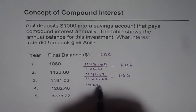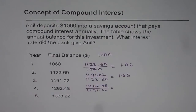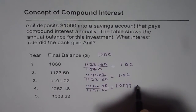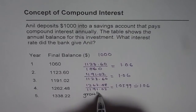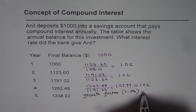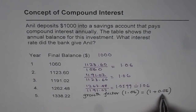That also gives us 1.06. Let's do it once again: 1262.48 divided by 1191.02 gives us 1.0599, which can be approximated to 1.06. So what we observe here is that the growth factor is 1.06. From the growth factor, you get the growth rate.